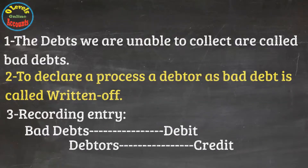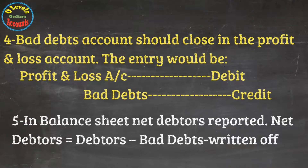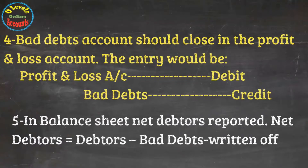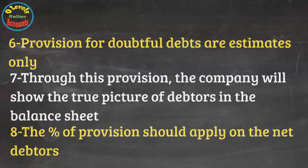Tip number 4 covers the closing entry, and tip number 5 is the reminder that the write-off value should be deducted from debtors in the balance sheet. Tip number 6 is for provision for doubtful debts. These are estimates; they show the true picture of the debtor, and the percentage is applied on net debtors.